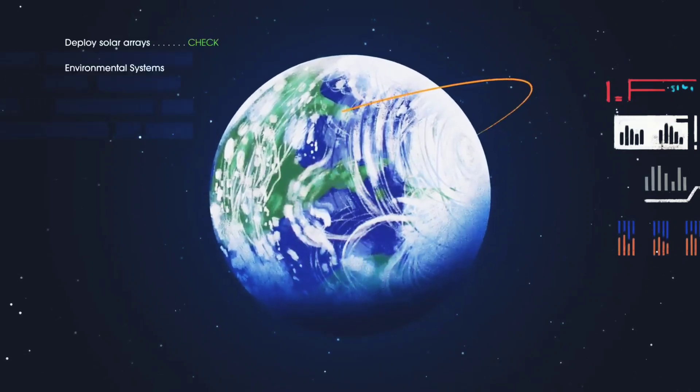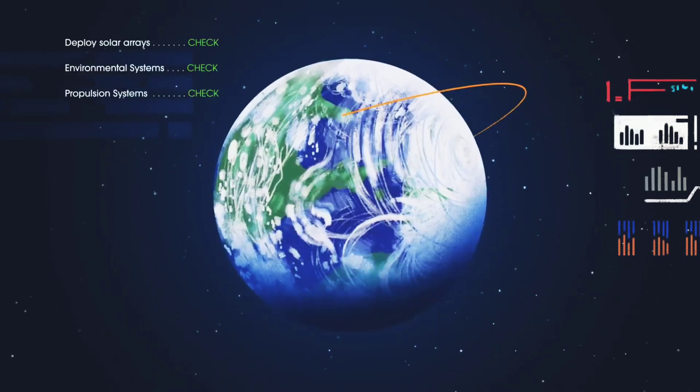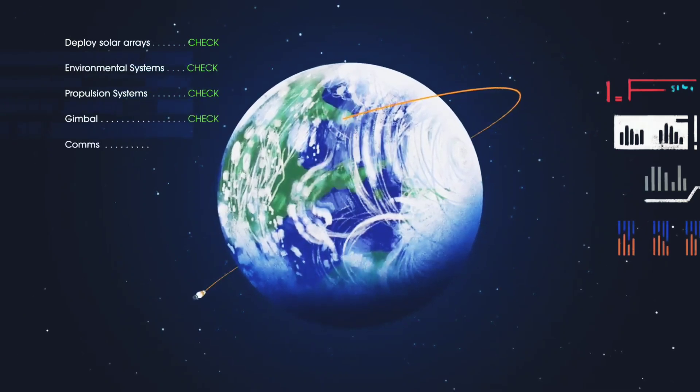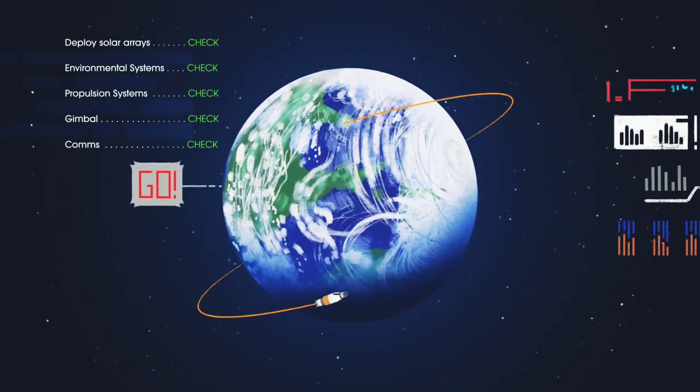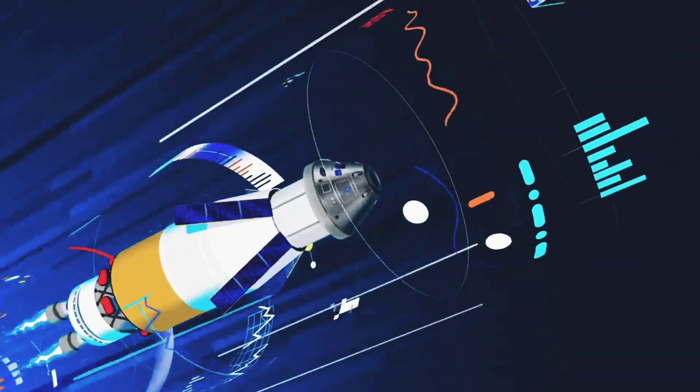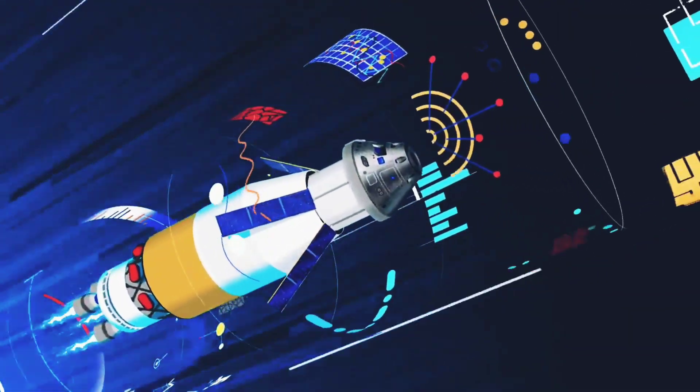Here, the crew reconfigure the spacecraft and check systems to confirm everything is ready for deep space travel. With a go from mission control, the crew reignite the exploration upper stage engines to leave Earth entirely.